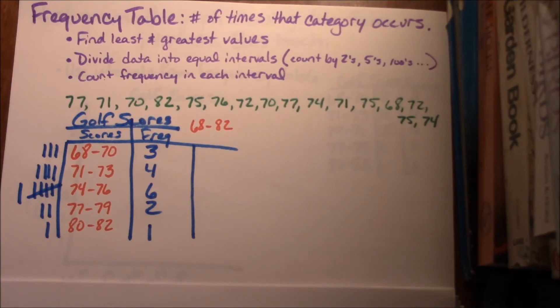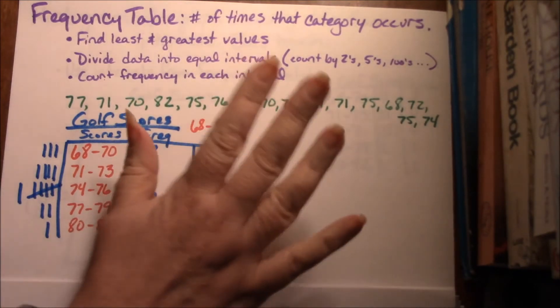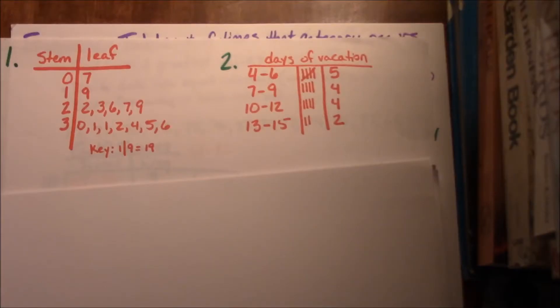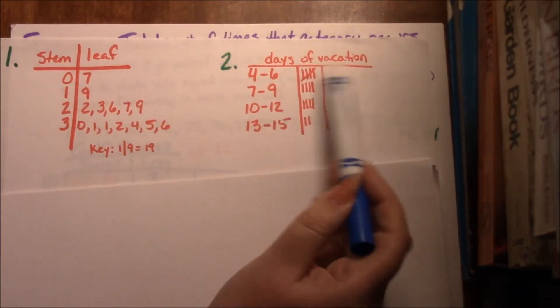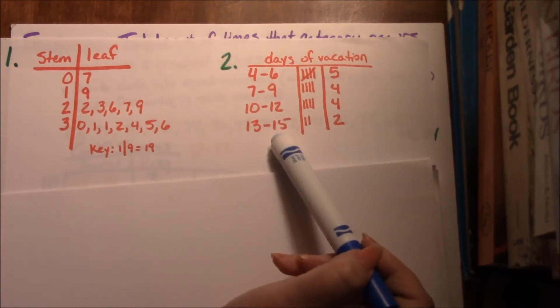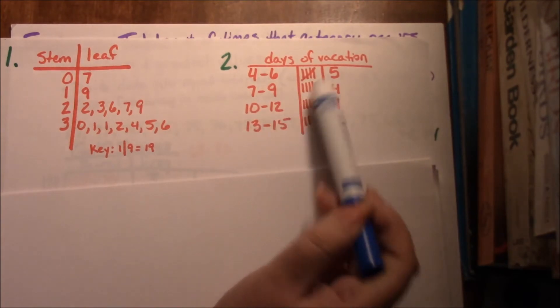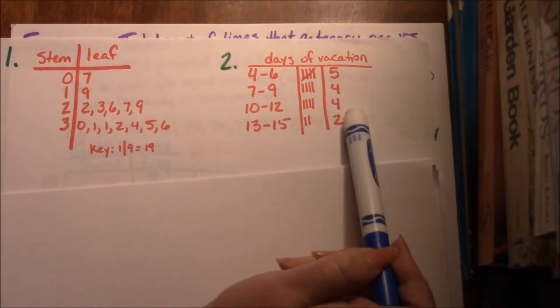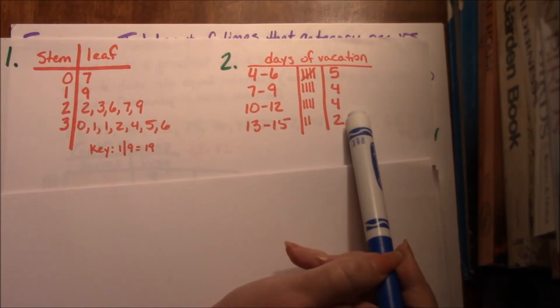Please try checkpoint number two. Pause here, come back when you're done. This frequency table shows the days of vacation, and I've broken it down into intervals, those same intervals of three days each. I've got my little tally marks, I've got my numbers, my frequencies there. If you did yours slightly differently, that doesn't make it wrong. It just means you have to double check your stuff.